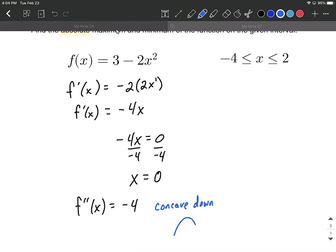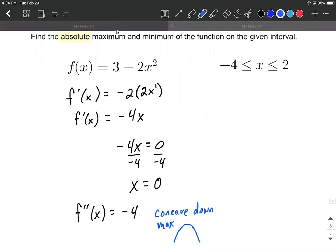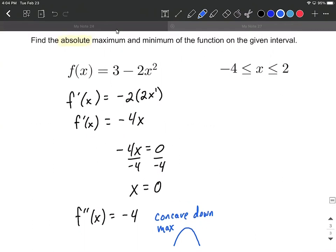Concave down looks like this. So what we're thinking is that should tell us we get a maximum. However, we're not sure if the absolute maximum is going to occur at an x value of 0 or not. So there's an extra step that goes into finding these absolute maximums or absolute minimums.